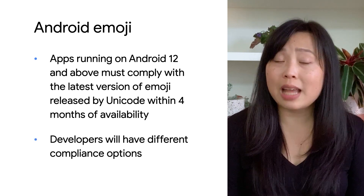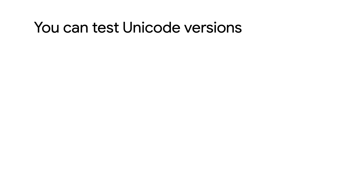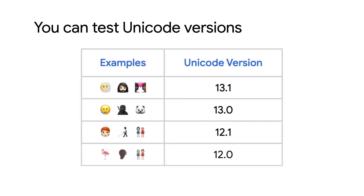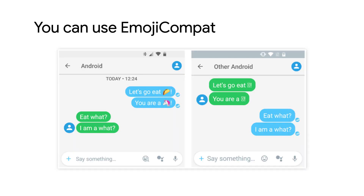Developers will have different options on how to stay compliant with this policy. You can check out the Policy Center for more about these options and additional resources. For example, we have a set of emoji examples shown here that you can use to test if your app is compliant with the latest Unicode version of emojis. If the emojis from the table don't show up correctly in your app, then you may be running an older version of the listed Unicode. We also have developer guidance and resources like the Emoji Compat Support Library to help you keep your app up to date. With the Emoji Compat Support Library, your users won't need to wait for Android OS updates to get the latest emoji.